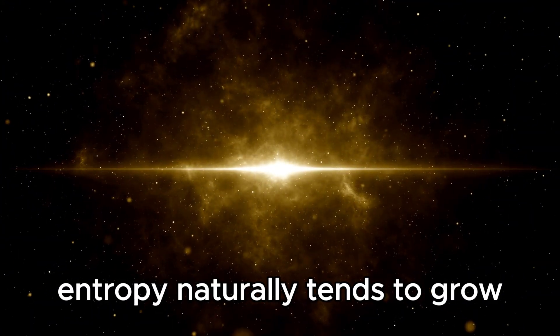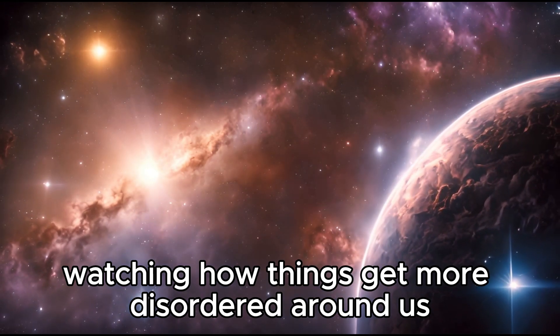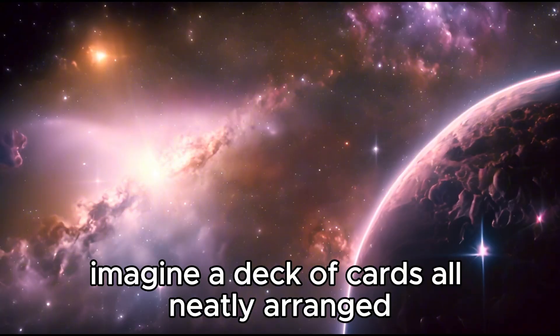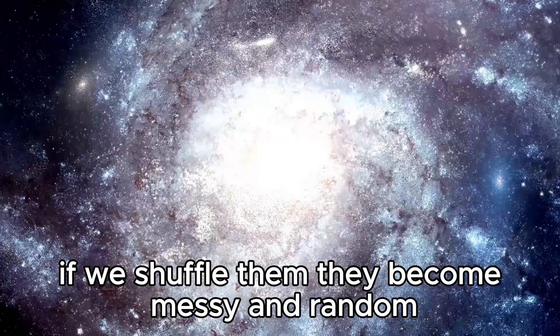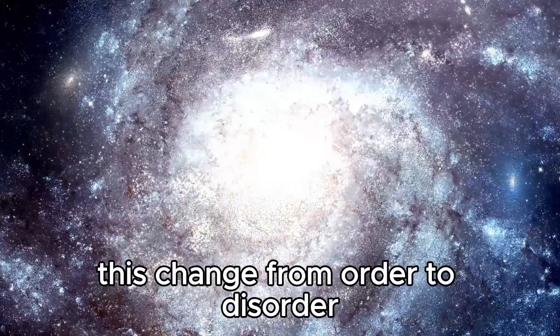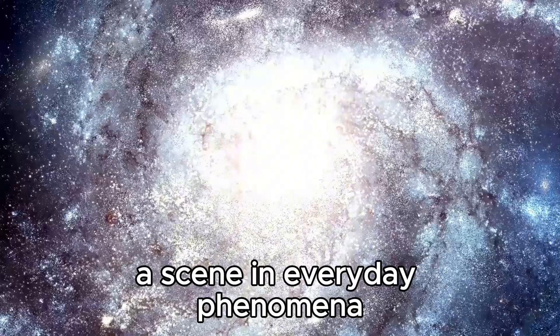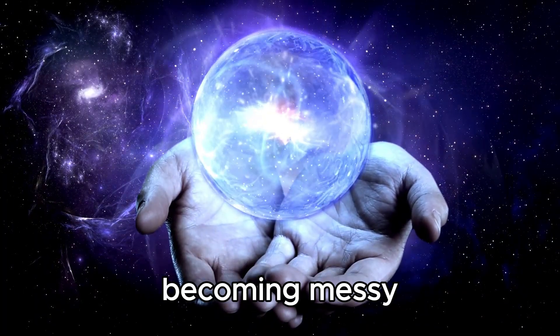In simple terms, entropy naturally tends to grow and doesn't decrease on its own. Watching how things get more disordered around us helps us see the one-way flow of time. Imagine a deck of cards all neatly arranged. If we shuffle them, they become messy and random. This change from order to disorder shows how time moves in one direction, as seen in everyday phenomena like ice melting or a stirred cup of coffee becoming messy.